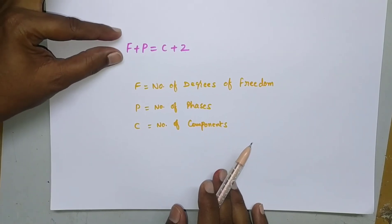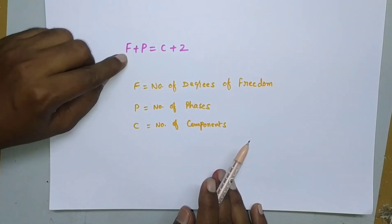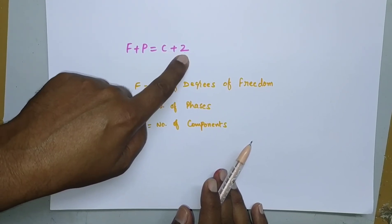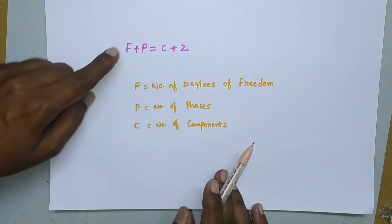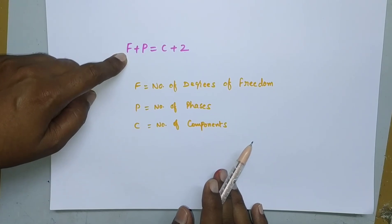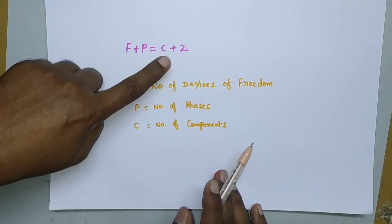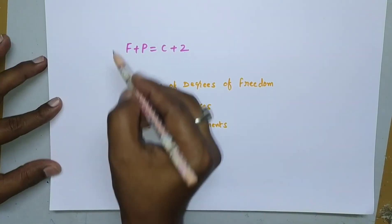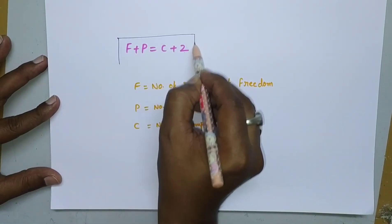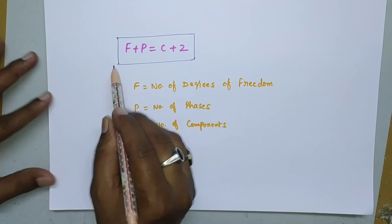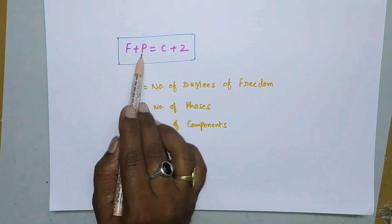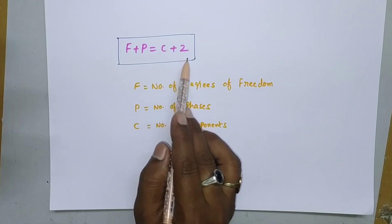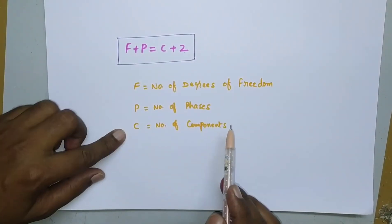The phase rule can be stated as: the sum of the number of degrees of freedom and the number of phases always exceeds the number of components by 2. This is the Gibbs phase rule. Now let us discuss these three terms — degrees of freedom, phases, and components — separately in detail.